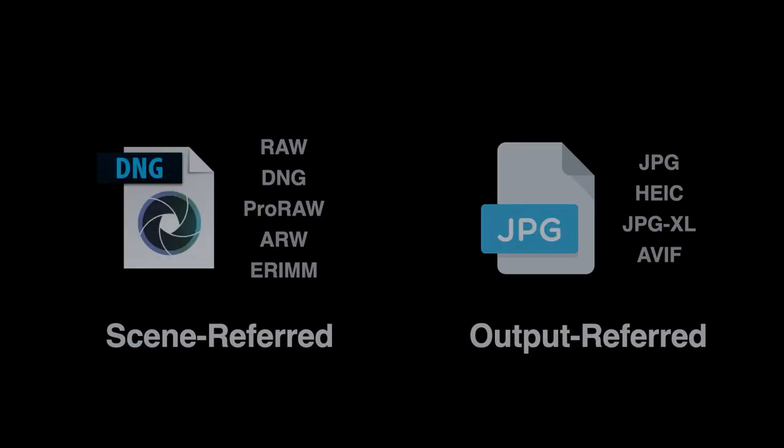Let's back up and talk about how we hold image data in digital files. Image data can be divided into two families of formats: scene-referred and output- or display-referred.